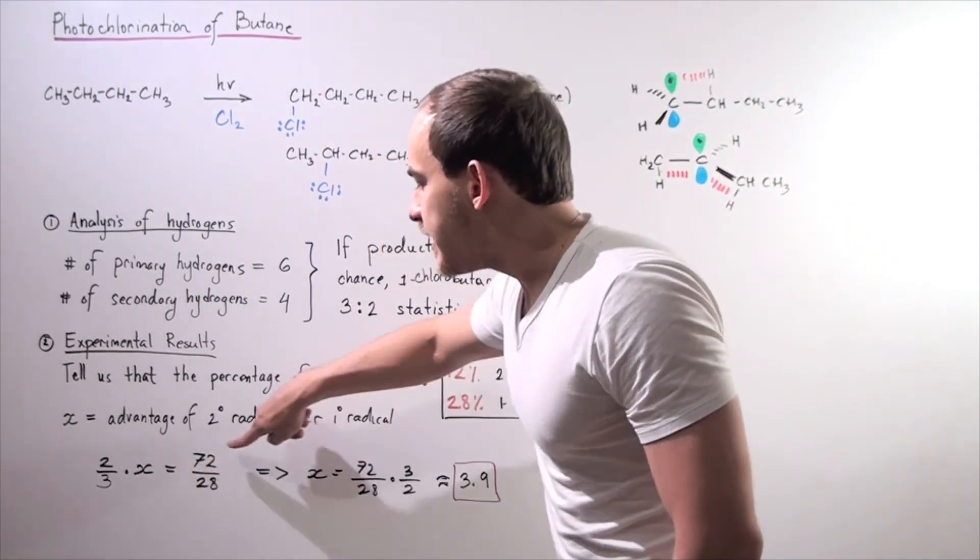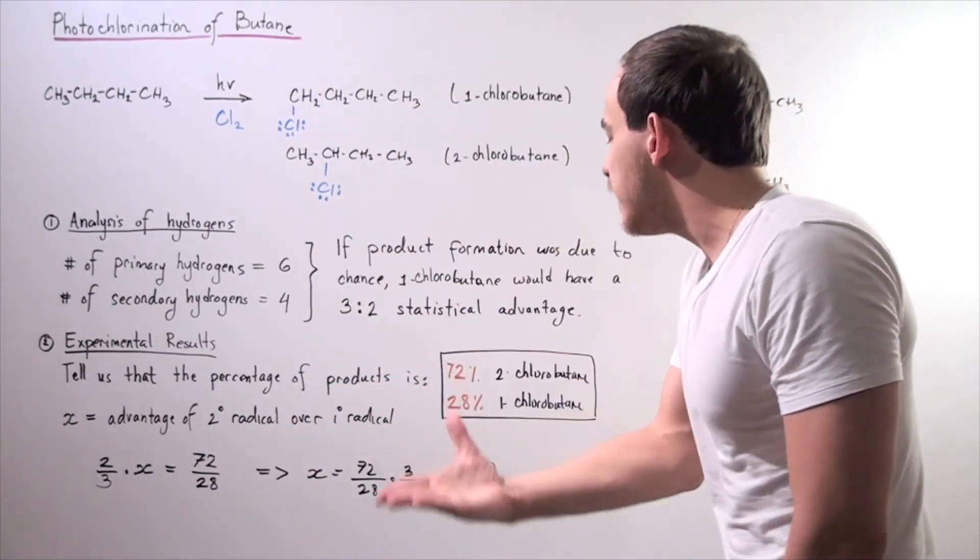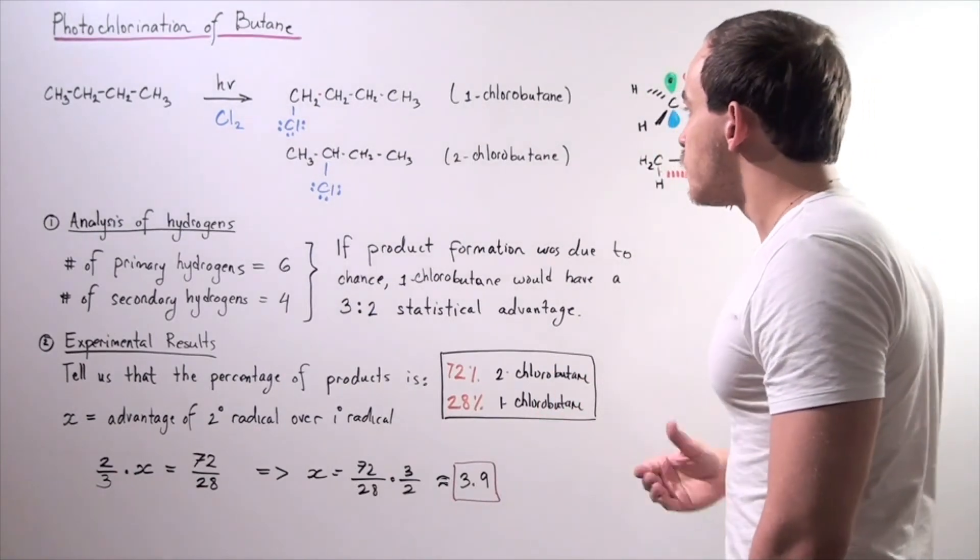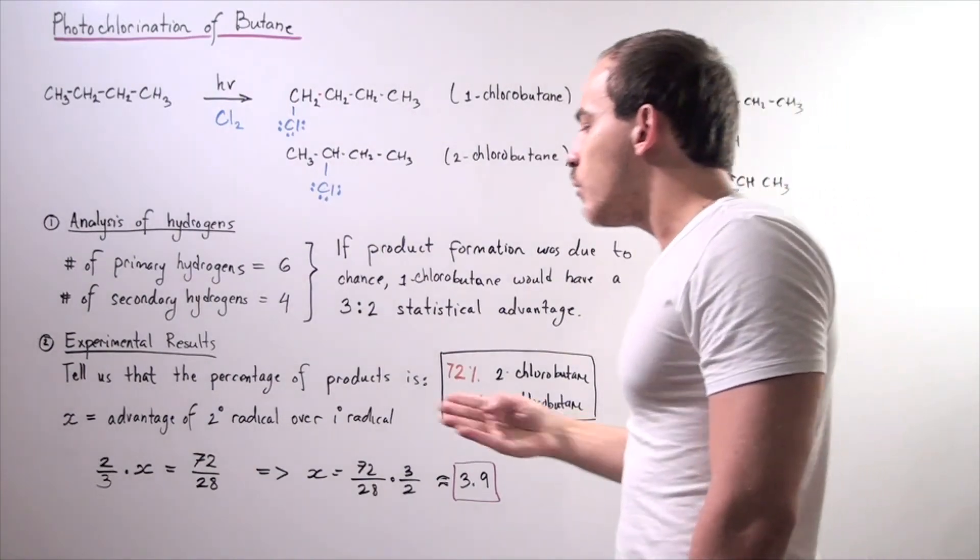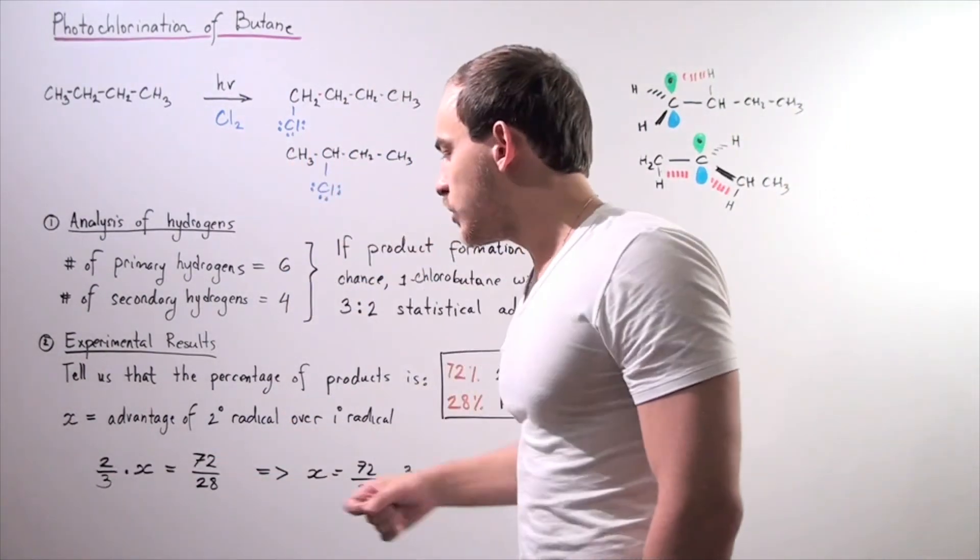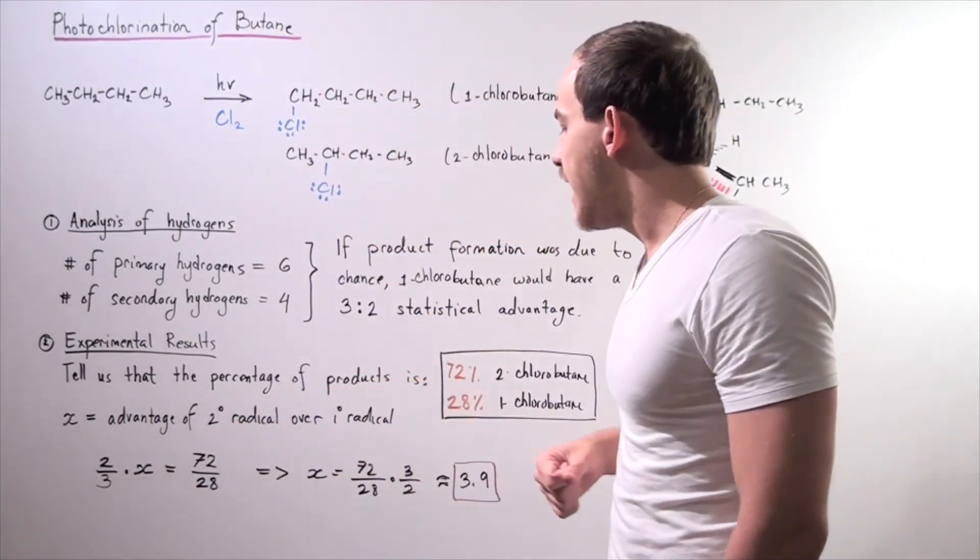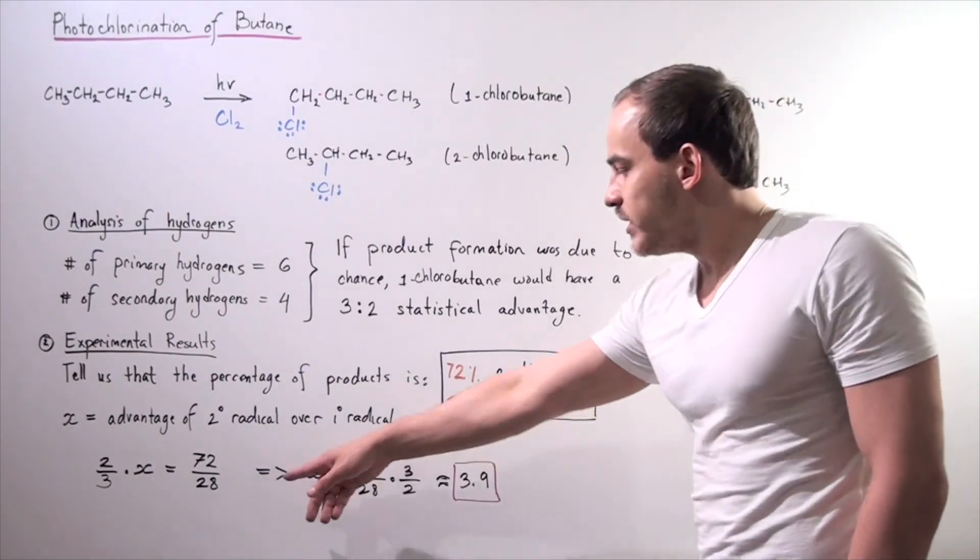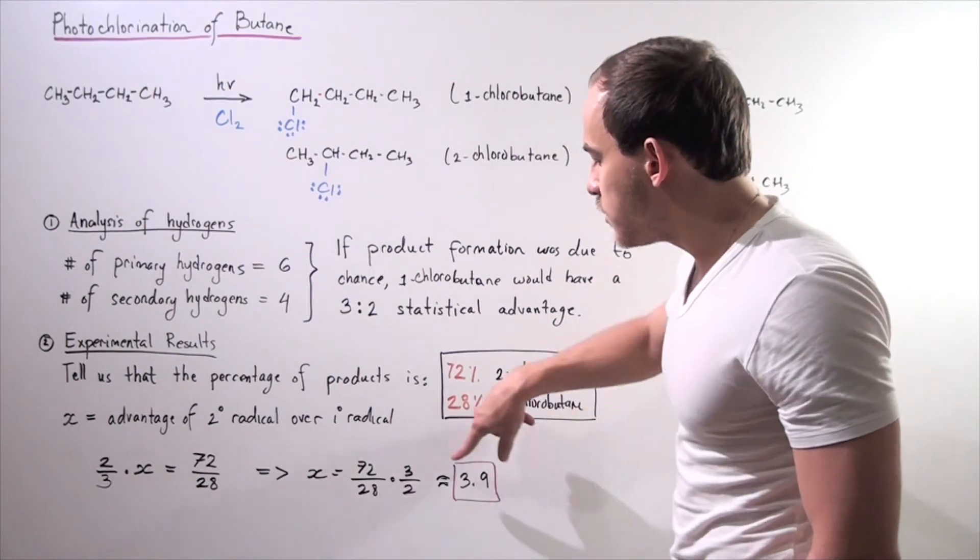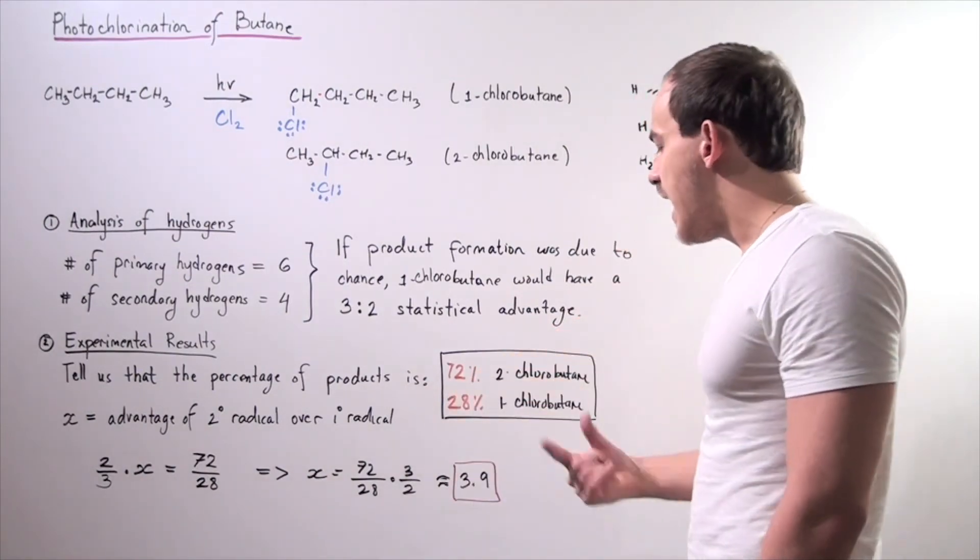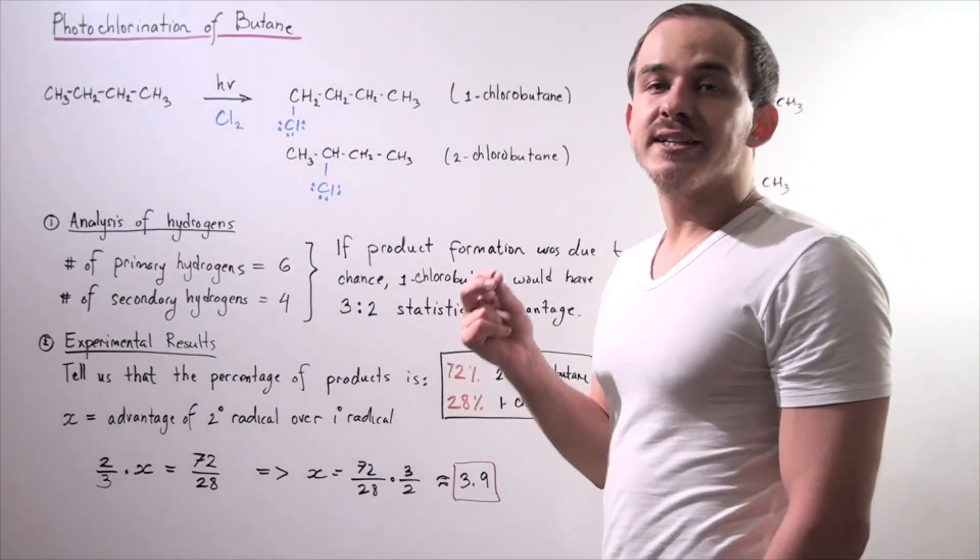So 72 to 28 is simply the ratio of this product formed, the major product to minor product. So now we rearrange our equation, we bring the 2 over 3 to this side, and we get x equals 72 divided by 28 multiplied by 3 divided by 2. That is 3.9.